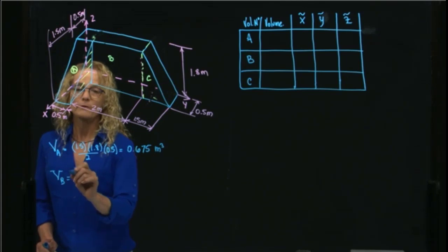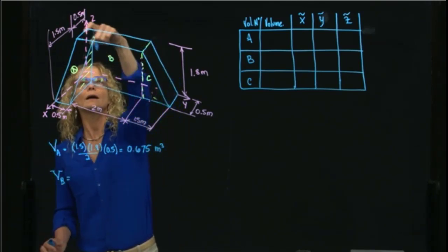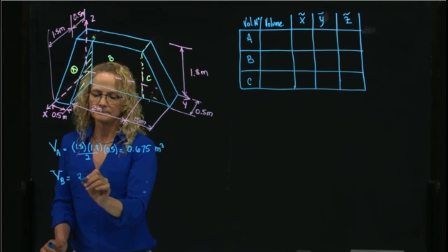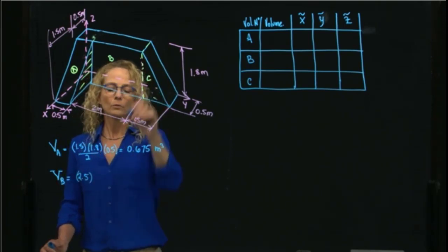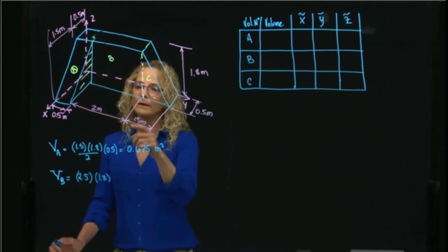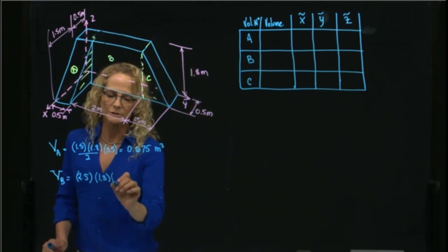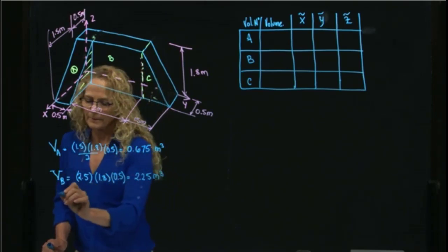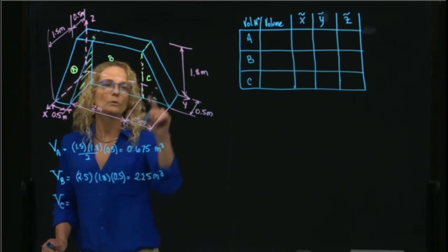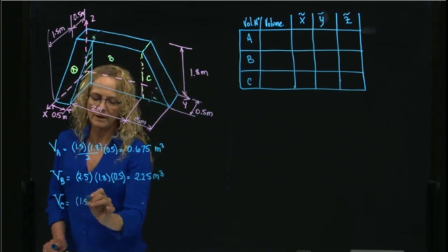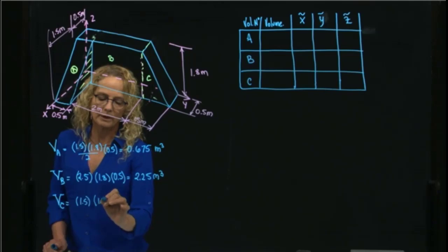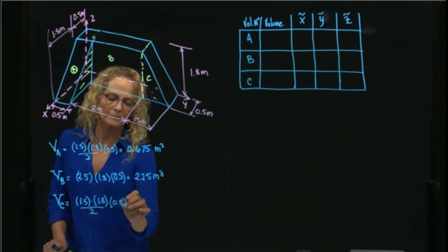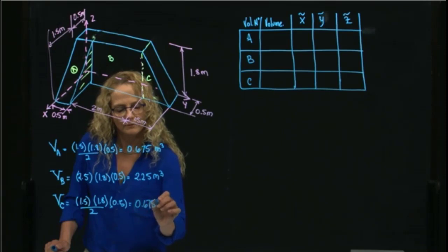Volume B is the whole rectangle that even goes behind the triangle. The base is 2.5, the height is 1.8. In this case I don't divide by 2, and I multiply by the depth, which is 0.5. That gives a volume of 2.25 meters cubed. Then volume C is this triangle right here — base 1.5, height 1.8, divided by 2, times the depth — giving exactly the same as the first one: 0.675 meters cubed.